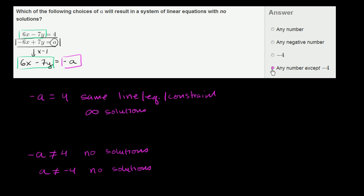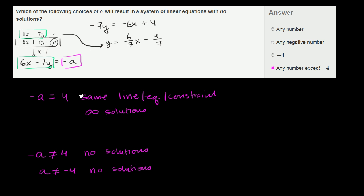Another way to think about this is to put both equations in slope-intercept form. They'll have the same slope, and you just want them to have different y-intercepts — parallel lines that don't overlap. The first equation gives y equals 6/7 x minus 4/7. For the second equation, adding 6x to both sides gives 7y equals 6x plus a, and dividing by 7 gives y equals 6/7 x plus a/7.